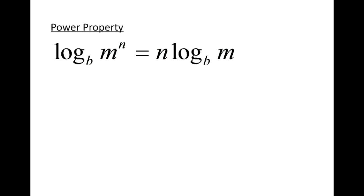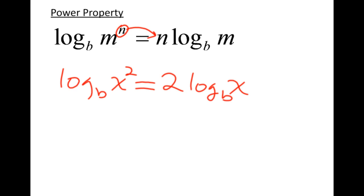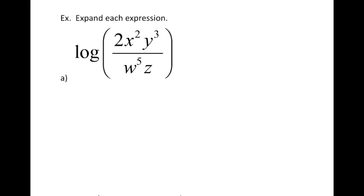The next property is the power property of logs. If I have an argument with an exponent, I can take that exponent and move it to the front of the log and multiply it as if it were a coefficient. So if I have log base b of x squared, I can rewrite this as 2 times the log base b of x. The exponent of the argument just comes to the front of the log. Let's take a look at all three of these properties and how we can use them to expand a single log.